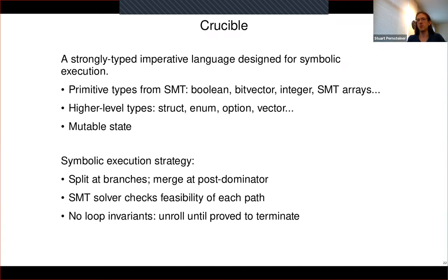One thing about this strategy is we don't require manually written loop invariants. Instead, we just unroll the loop until the solver can prove that the back edge is no longer taken. This means your loops have to have some kind of termination condition that the solver can easily reason about. If it can't ever prove your loop will terminate, it will keep unrolling forever and you won't get any answers.